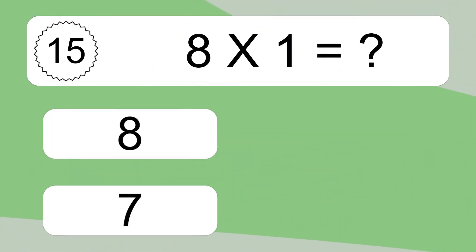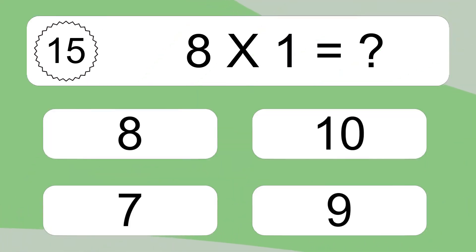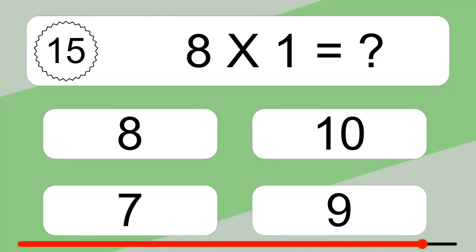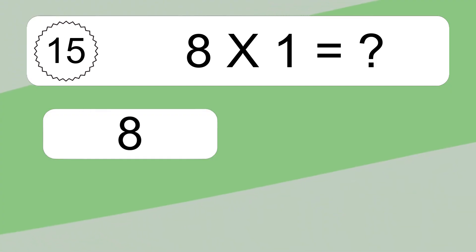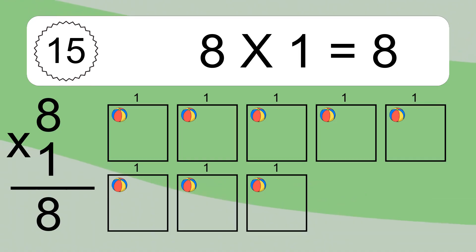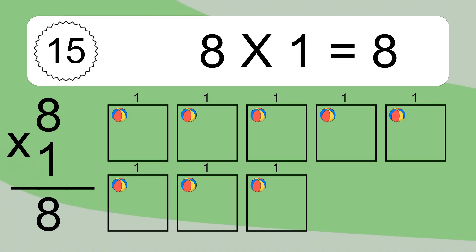8 times 1 equals what? 8 times 1 equals 8. We have 8 boxes, and each box has 1 colorful ball inside. If you count all the balls in all the boxes together, you will have 8 times 1 balls. This equals 8 balls.